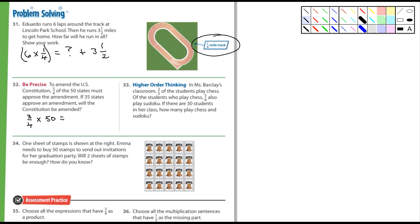In Ms. Spark's classroom, two-fifths of the students play chess. Of the students who play chess, five-sixths also play Sudoku. If there are thirty students in a class, how many play chess and Sudoku? Well, first part is going to be two-fifths times thirty. Turn thirty into a fraction. It's going to equal something. And then, kind of like number thirty-one here, whatever that something is, that's going to be times five-sixths. And then, whatever number you get, that's, if there are thirty students, how many play chess and Sudoku? Whatever that last number is, is the answer to number thirty-three. These are good questions. I like these.